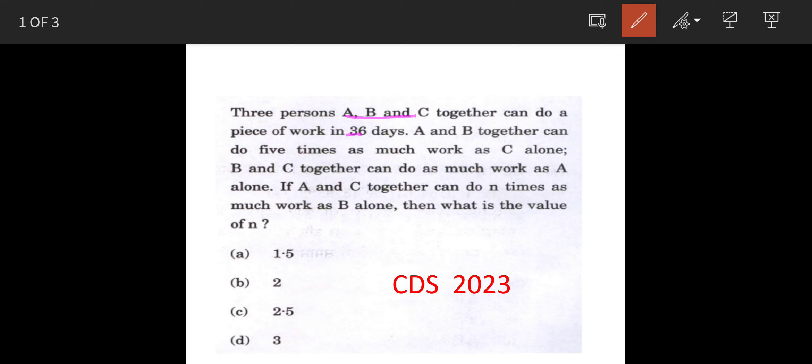The question says that A and C when they are working together can do N times the work that B can do. So what is the value of N? This is the question and these are the options. So we will see the solution.